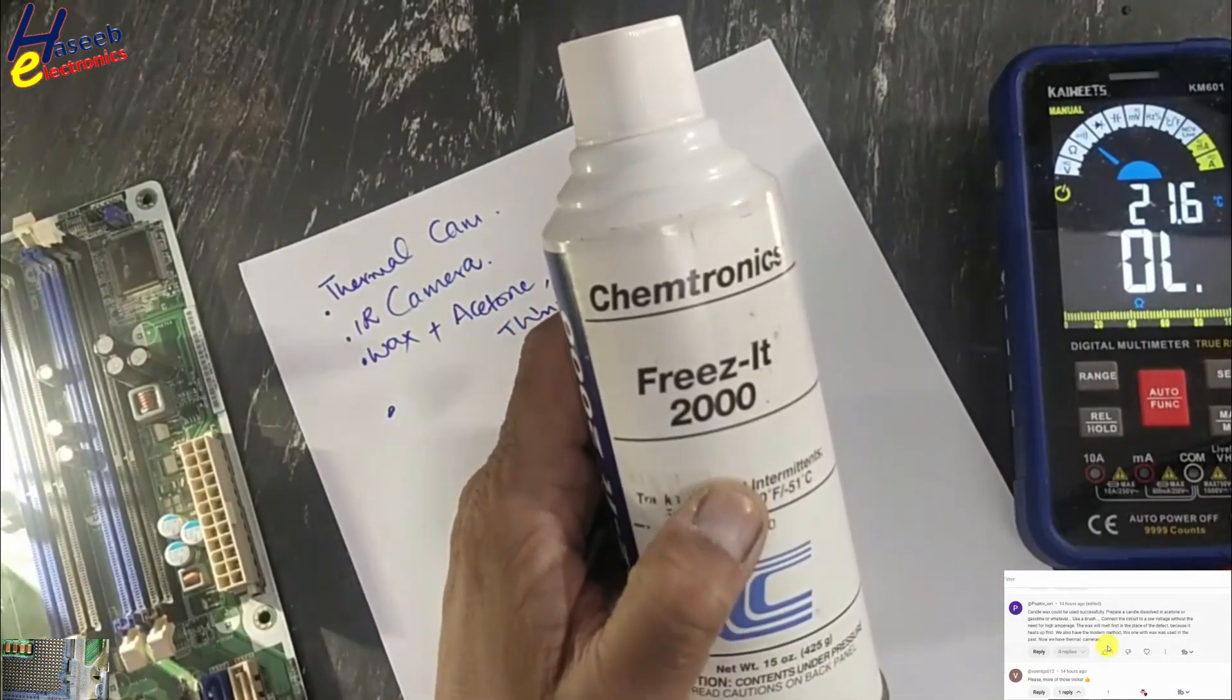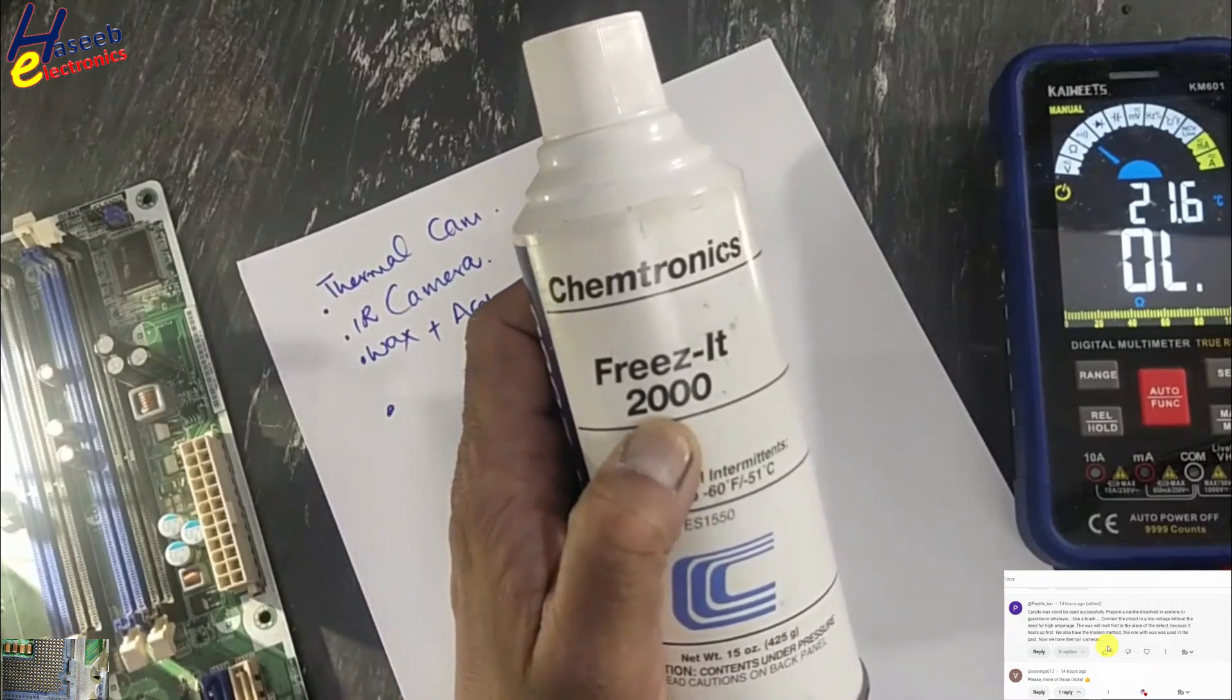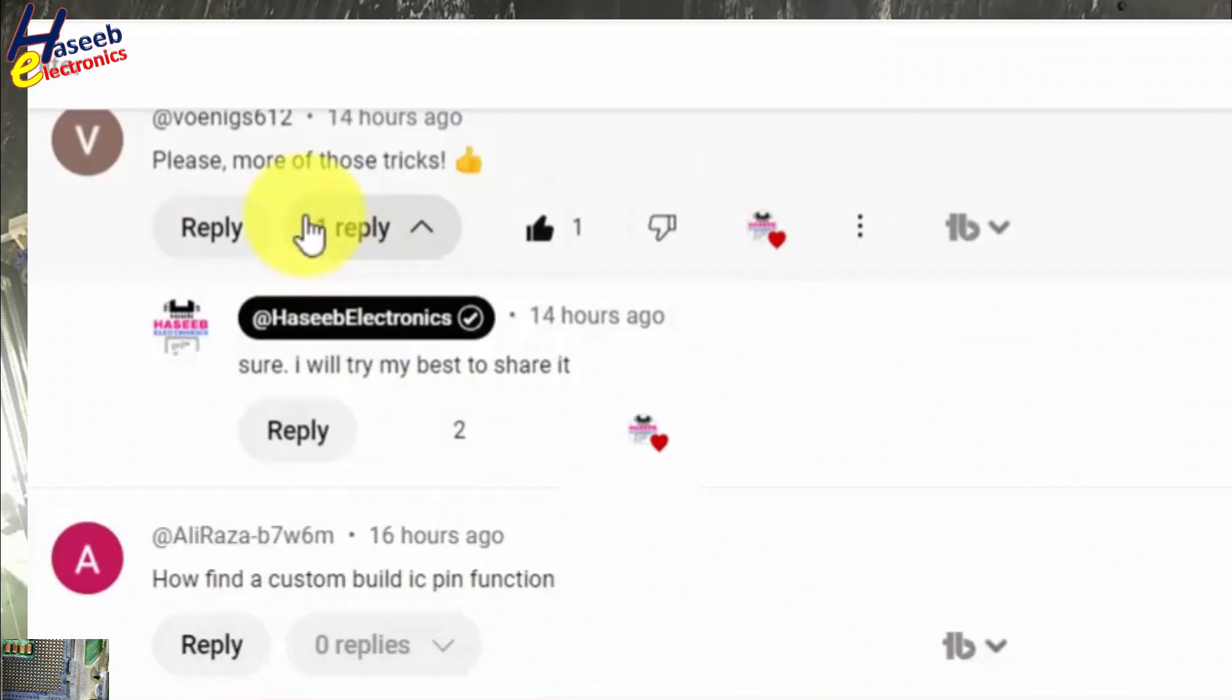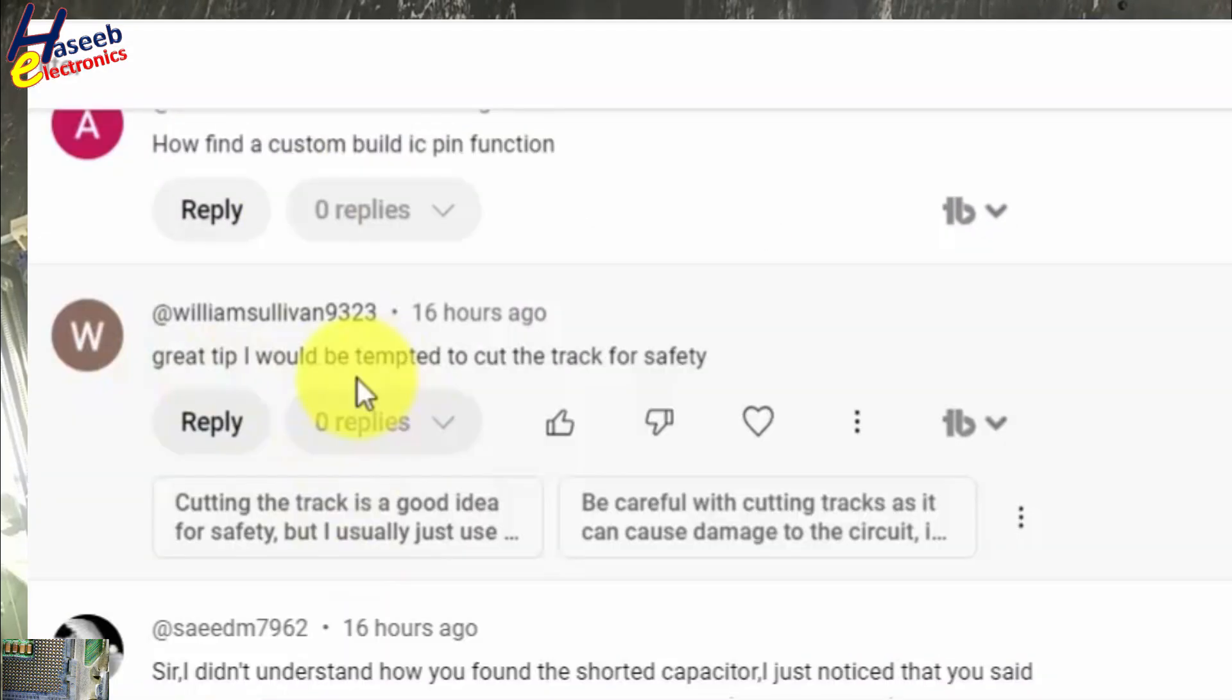We can also use Freeze-It, it is Chemtronics Freeze-It. We will use it now. Please note those tricks. I would be tempted to cut the track. We can also cut the track, that time we will isolate the problematic area, but that will degrade the circuit.